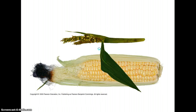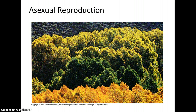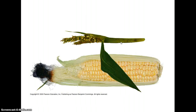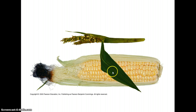Many plants can reproduce asexually. We talked about that with kalanchoe, and many grasses can just send out shoots. These aspen trees can send out shoots that will put up a whole new tree, so you can get vast clones. But sexual reproduction is quite important as well.